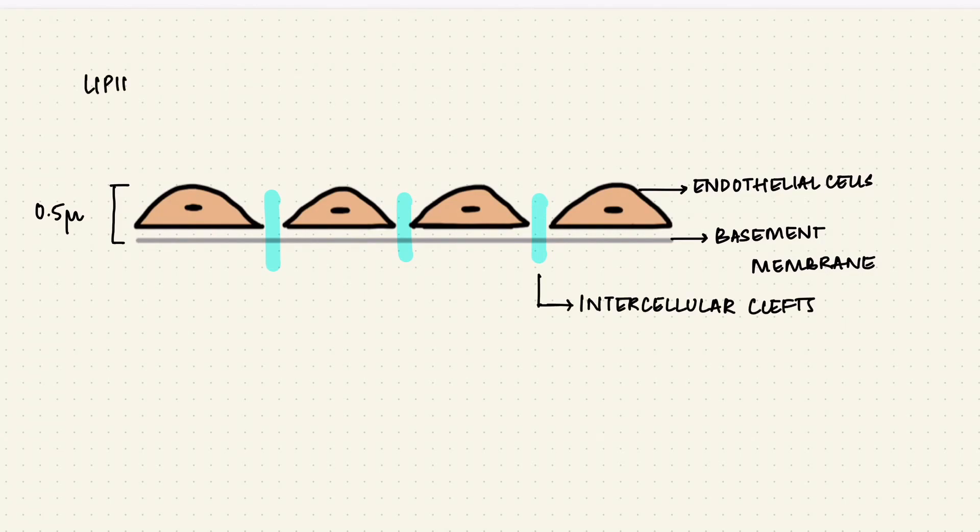Lipid-soluble substances can move across the membrane by simple diffusion, like oxygen and carbon dioxide. But substances that aren't lipid-soluble but are water-soluble and are small can go through the intercellular spaces, like sodium and glucose. But there's a size limitation, so larger molecules like plasma proteins cannot pass through.